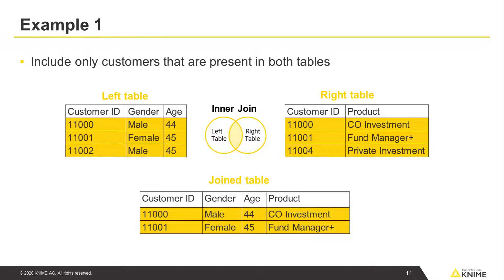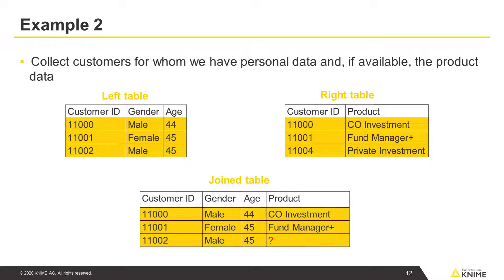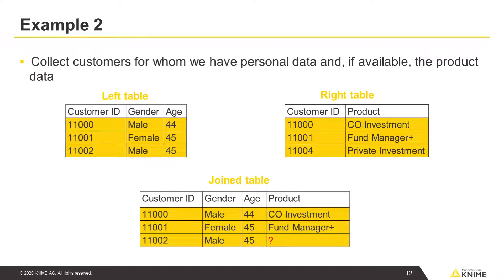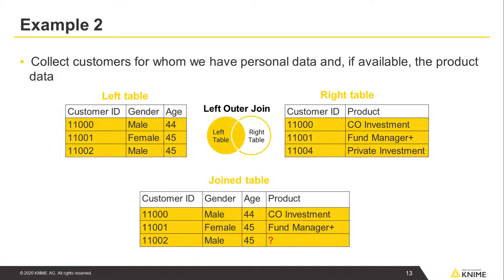In our example, these are the customers with IDs 11,000 and 11,001. This join mode is called inner join and its output includes only those rows that match between the two tables. Now let's collect the customers for whom we have the personal data and, if available, add the information about their selected investment product. The join table then includes all the rows from the personal left table. For those rows that can't be matched with any row from the product's right table, the product column will be filled with missing values. The corresponding join mode is called left outer join.